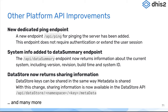Data store sharing information is now returned in the data store metadata API. This is another example of an extension to the DHIS2 API included in version 40. There are many more examples of these small improvements or changes to the API, which are listed in the release notes or in the detailed JIRA issue breakdown that is also included with the version 40 release.